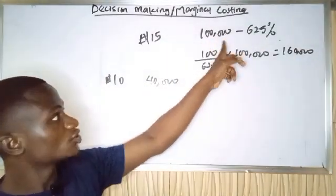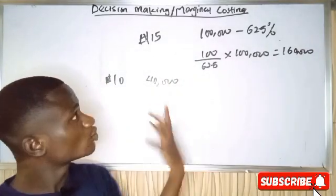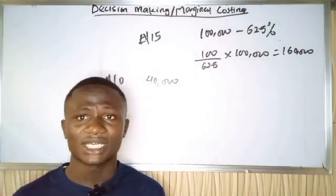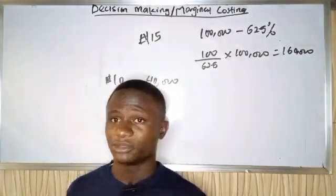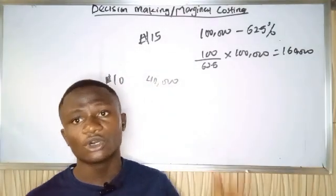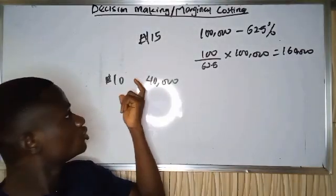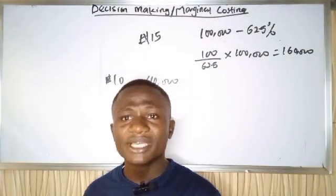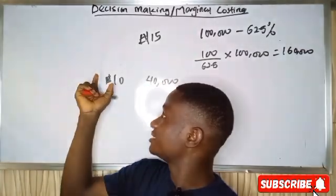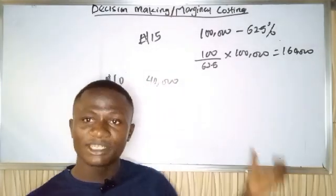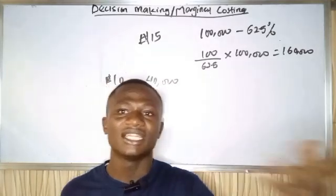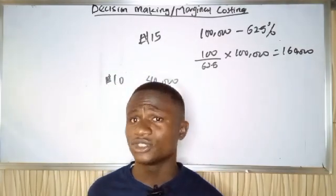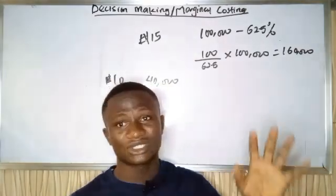To make the decision, we use marginal costing. We calculate the contribution: take the price offered (10 naira) and set it against all variable costs. If that price covers all variable costs and still leaves something positive, we accept. If it results in a negative contribution, we reject. The most important costs in marginal costing are variable costs — fixed costs are ignored in this decision.